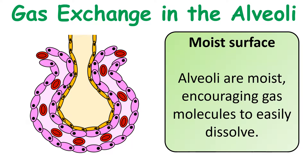One of the other adaptations of alveoli is that they've got a moist inner lining. That moist inner lining is there to speed up gas exchange. It does this because the gases in the air are more likely to diffuse into a moist layer rather than diffusing straight into a cell. That layer of moisture enables gases to dissolve into it, which therefore increases gas exchange within each alveolus.